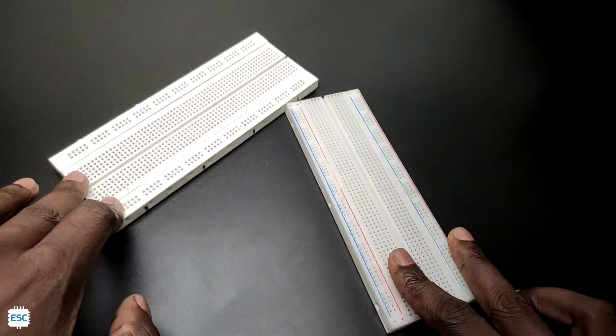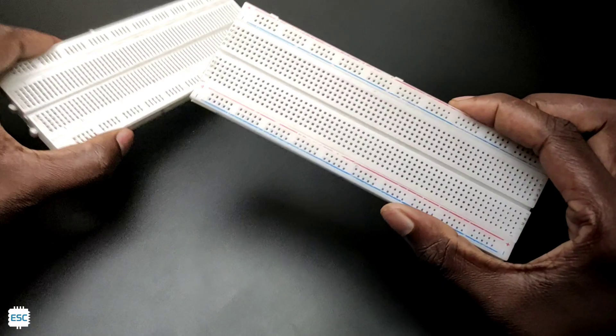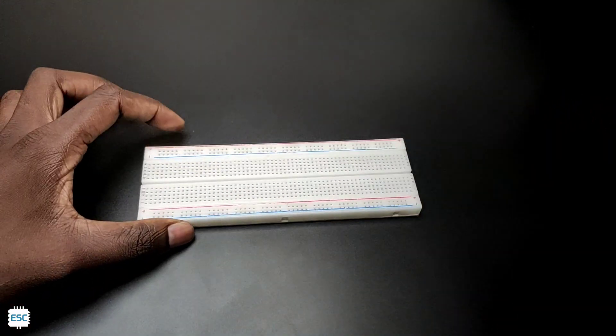So these are the standard breadboards. The left one is GL12 and this is MB102. This is the high quality and commonly used one. So I am designing the supply for MB102.